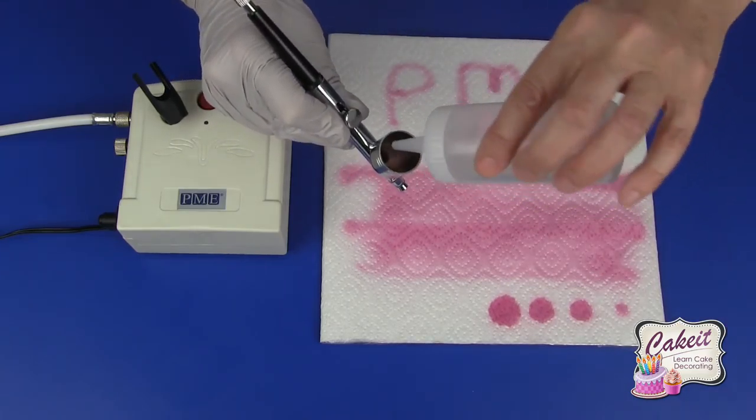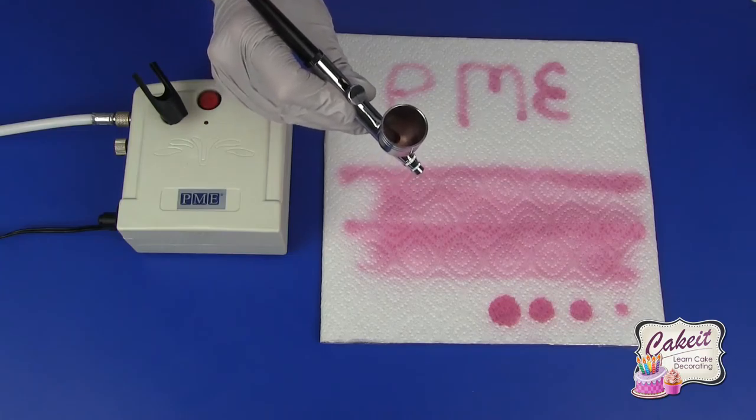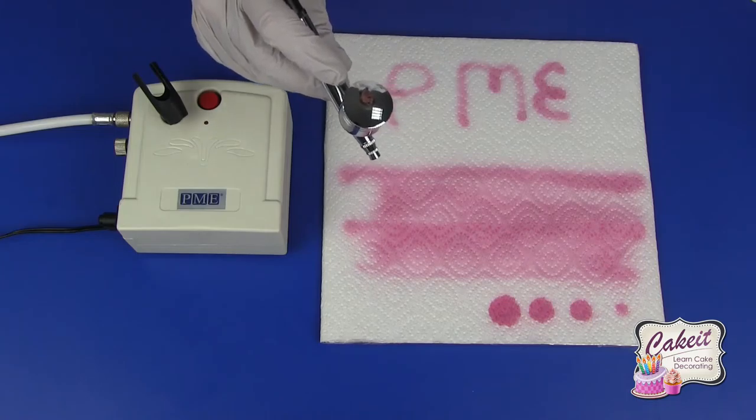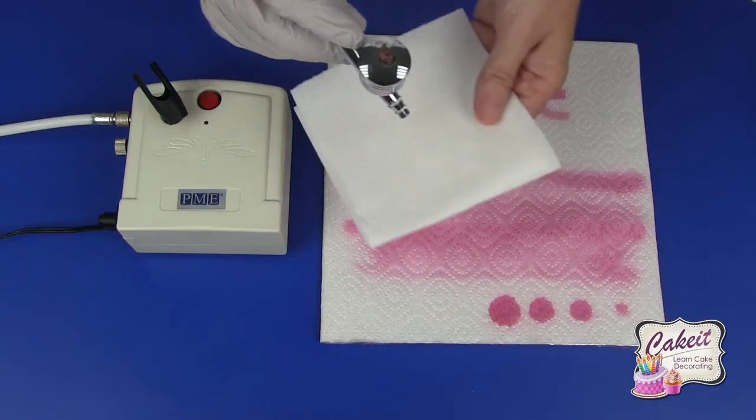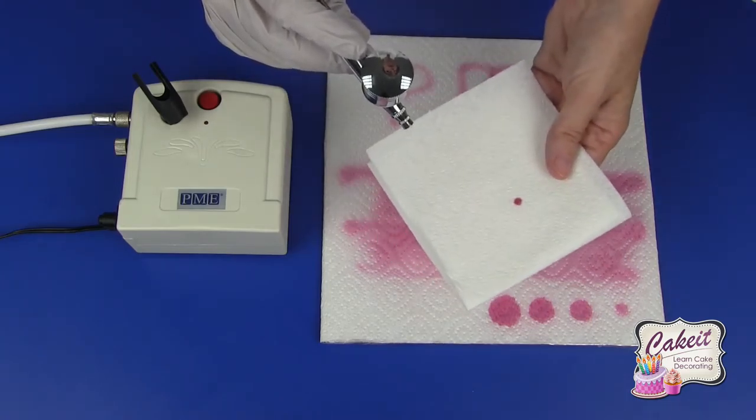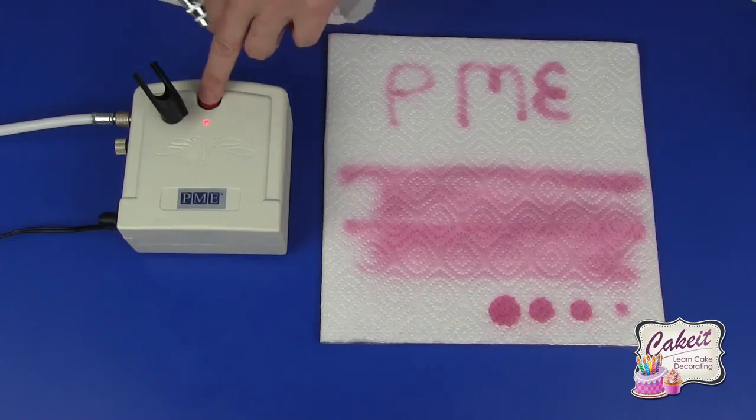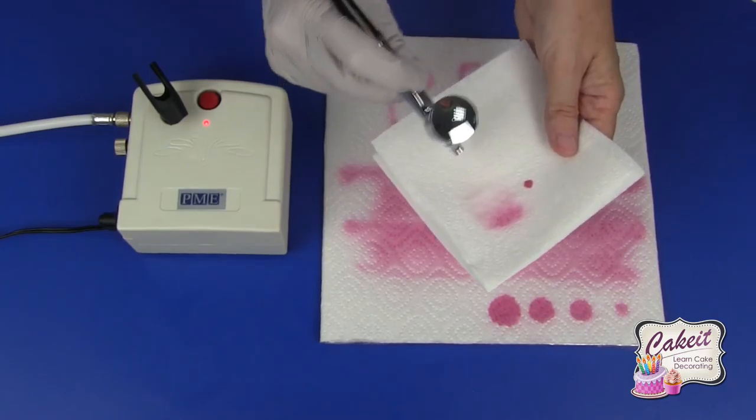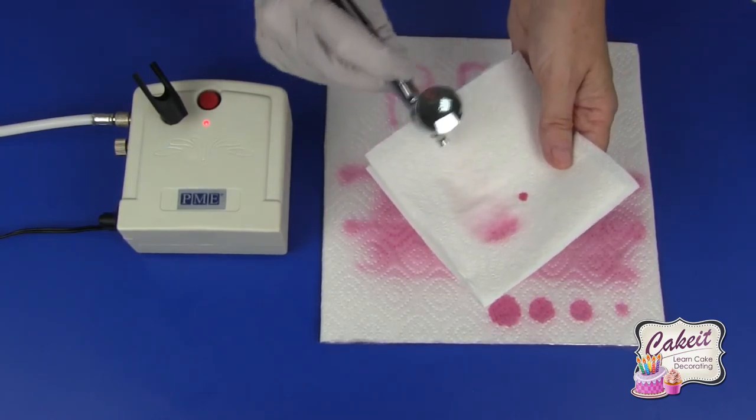Add in some lukewarm water, not too much, add the lid back on, and now into some paper towel switch the airbrush on until you get clear liquid coming through. You can see that's clear now.